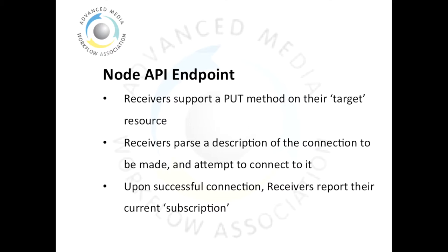When a PUT is made to one of these resources, it includes a sender resource from another node. As a result, the receiver is then able to use this to parse details of the sender it needs to connect to. As described in the last screencast, a sender includes a manifest href, which in the case of RTP would be an SDP file.